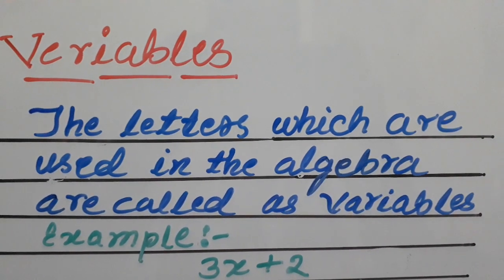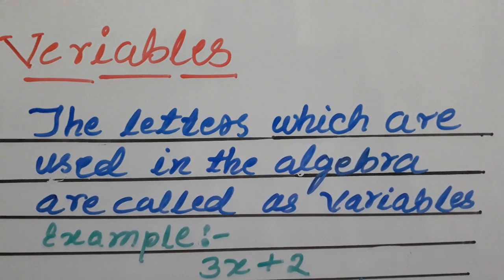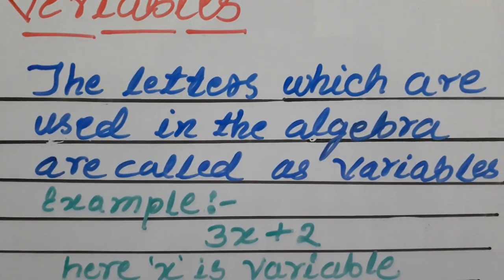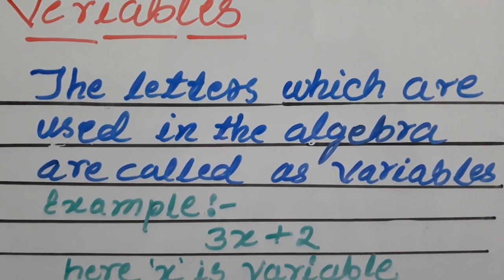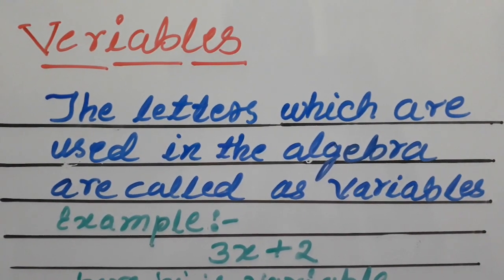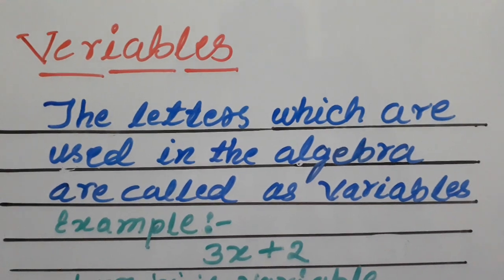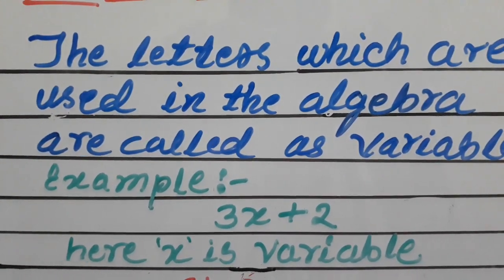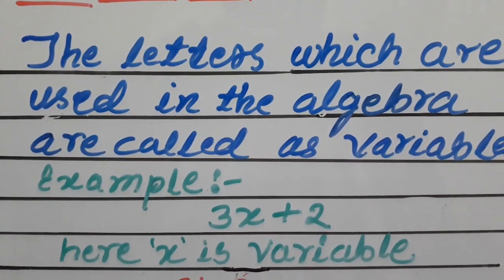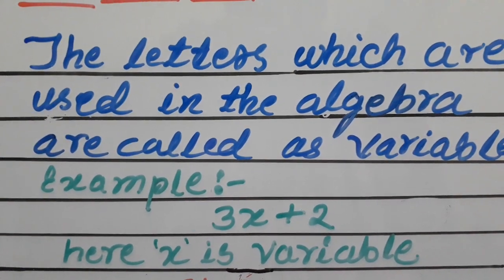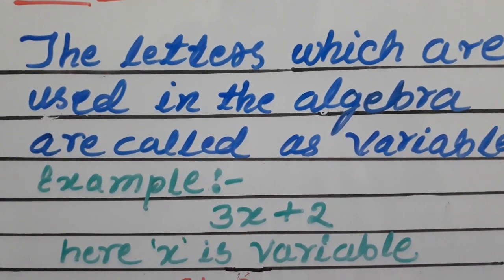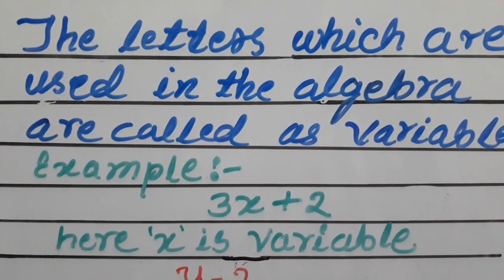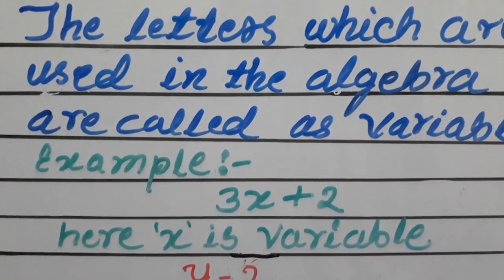The letters which are used in algebra are called variables. Let's see some examples. The first one is 3x plus 2 — this is an expression. We will learn about expressions later, but here we are learning what a variable is. In 3x plus 2, the variable is X. Variables means the value is changing or varying, so X is called the variable.